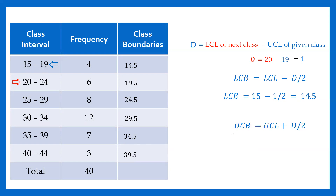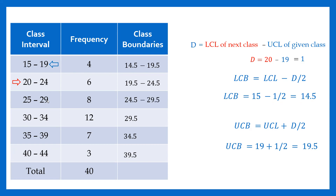Also, the upper class boundaries can be calculated using this equation: upper class limit plus difference divided by 2. The difference divided by 2 is 0.5, so we add 0.5 to each upper class limit. The upper class boundaries are: 19.5, 24.5, 29.5, 34.5, 39.5, and 44.5. These are the class boundaries.